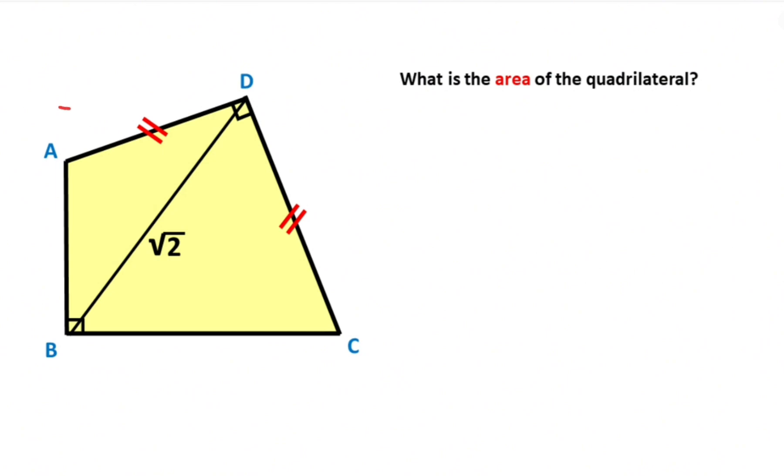First of all, to create a rectangle, I want to draw a parallel line to BC and connect here. Next step, let's draw one more parallel line to line AB, like this. Let's call here point K and here point T. After that, let's call here alpha, here theta.